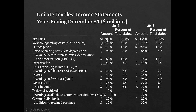Even though sales went up, earnings went down from 2017 to 2018. With an imputed 40% tax rate, net income is $54 million in 2018 versus $59 million in 2017. Fixed operating costs, depreciation expense, and interest expense all went up faster than net sales, causing net income to decline. Earnings available to common stockholders (EAC) was $54 million in 2018 versus $59 million in 2017.